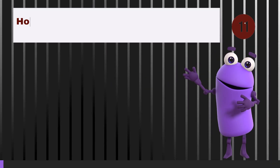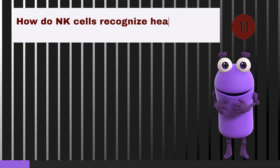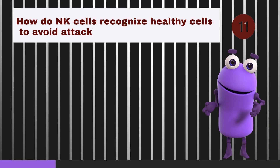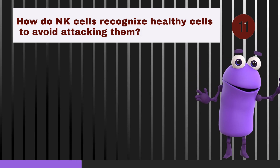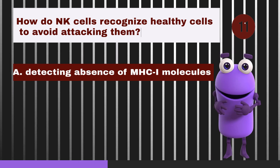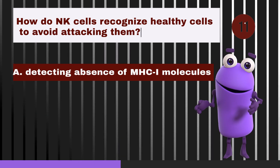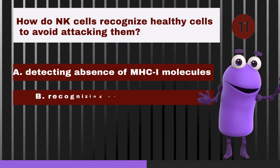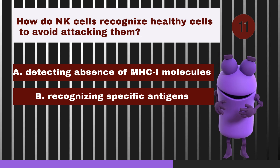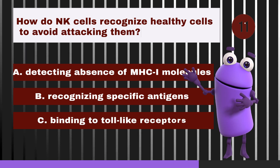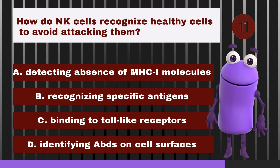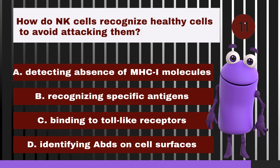How do NK cells recognize healthy cells to avoid attacking them? A. By detecting the absence of MHC class 1 molecules. B. By recognizing specific antigens. C. By binding to toll-like receptors. D. By identifying antibodies on cell surfaces.